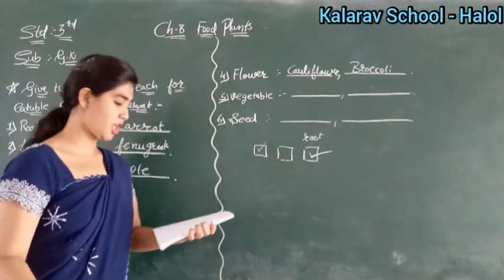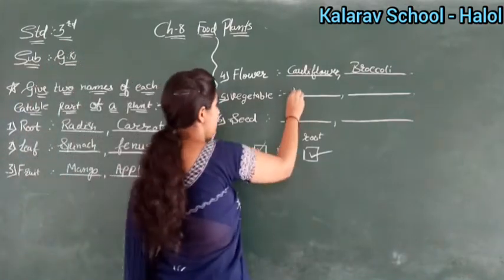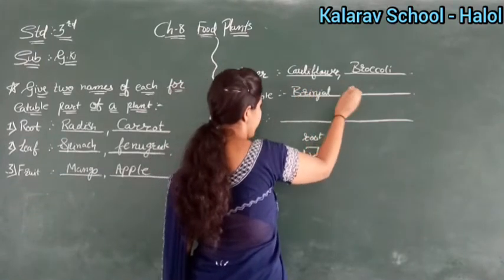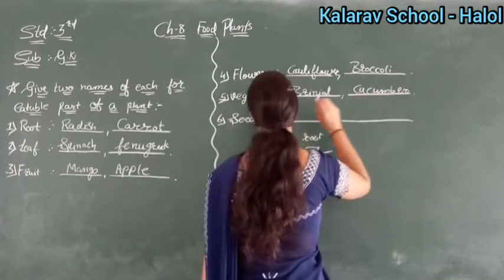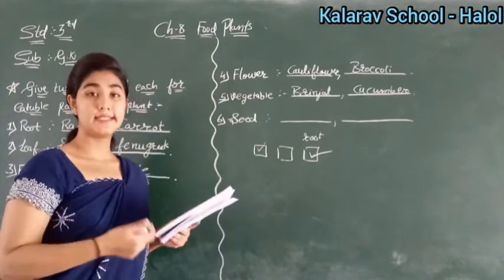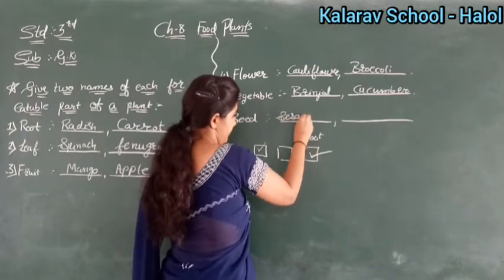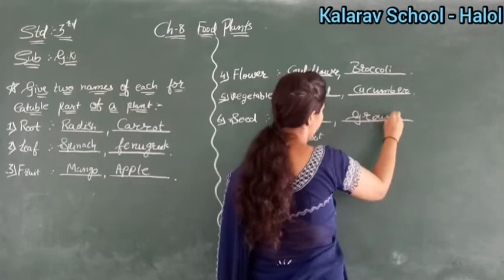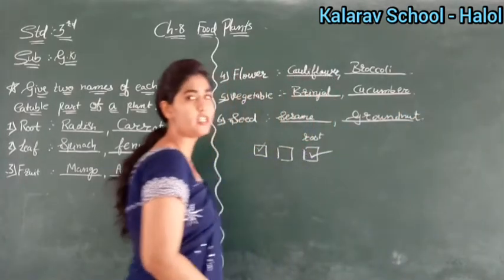Then next is vegetable. Which vegetables do we eat? Brinjal and cucumber. So here you will write brinjal and here you will write cucumber. Then next is seeds. Which seeds do we eat? Sesame seed and groundnut seed. So here write sesame and groundnut.